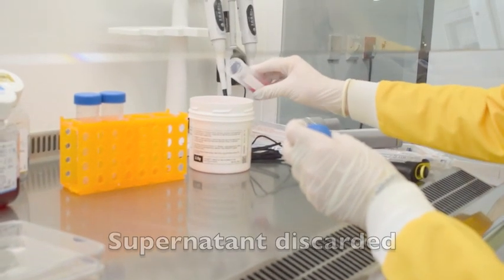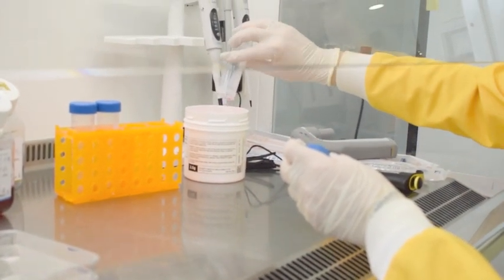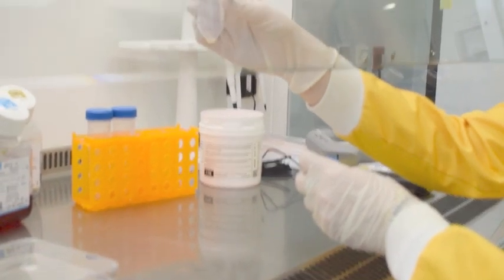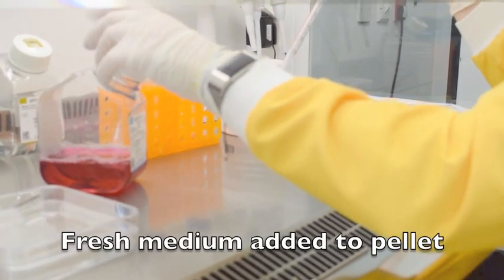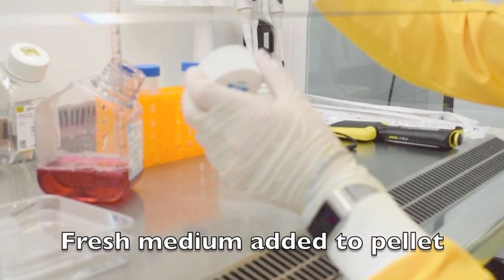The supernatant is then discarded by pouring, leaving the cell pellet at the base of the tube. The cell pellet is then resuspended in fresh medium.